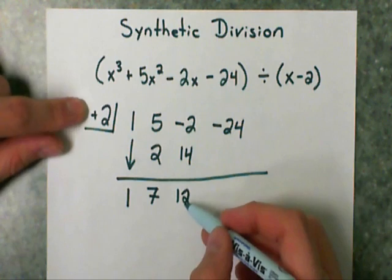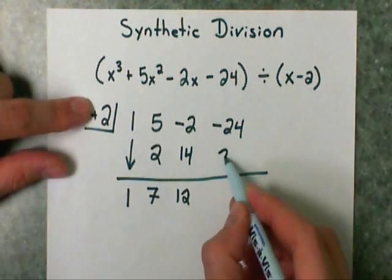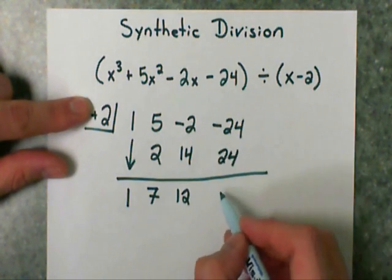Again, the number in the box times this. So 2 times 12 is 24. Add that together, and I get 0.